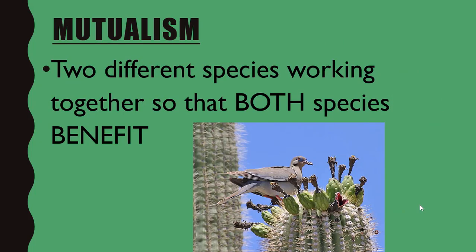So that's mutualism. We have two different species working together, and the key word is that both species benefit in some way. In all our examples, nobody was hurt — no harm happened. Aphids get protection, ants get food, tick bird gets food, antelope gets protected from disease, bumblebee gets food, and the flower gets pollinated. Both species get a benefit out of their working relationship.